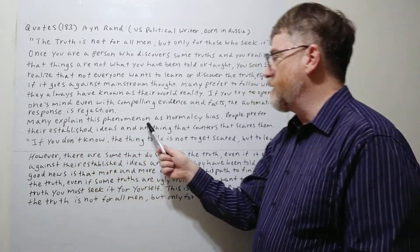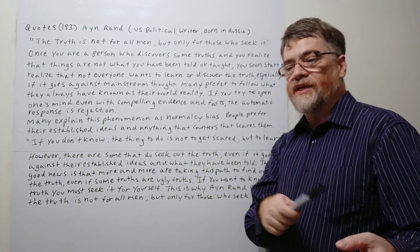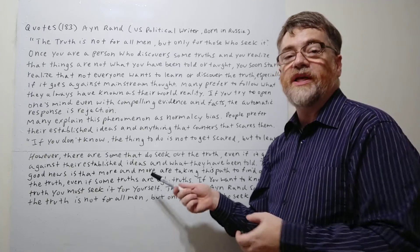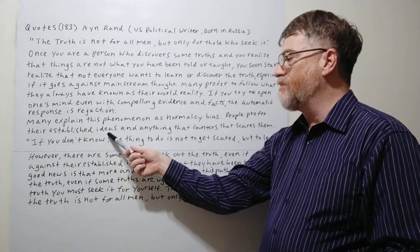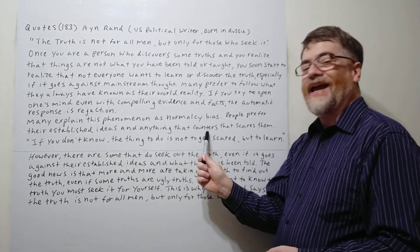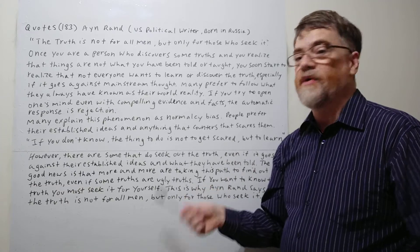Many explain this phenomenon as normalcy bias. People prefer things to always be the way they normally thought they were. People prefer their established ideas and anything that counters or goes against that scares them, makes them afraid.